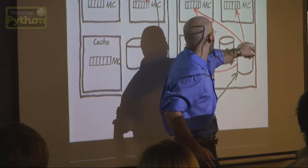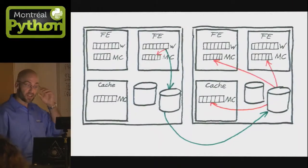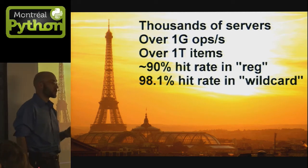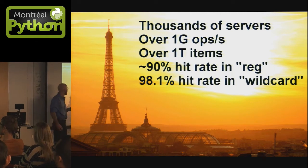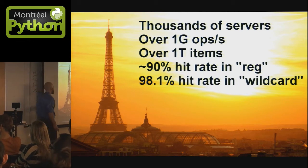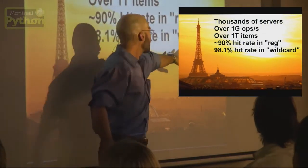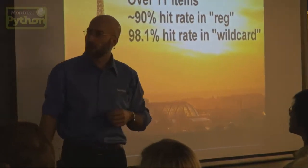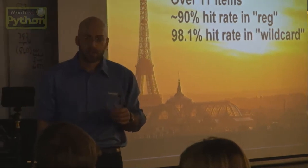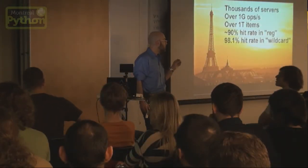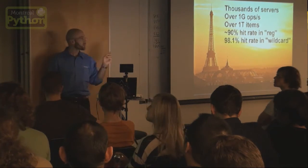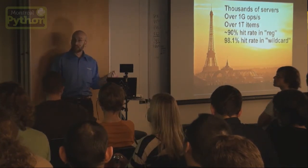In terms of scale, that's an infrastructure that is composed of thousands of servers. Over a billion cache operations per second. Over a trillion key value pairs. And we segment the memory space into multiple pools. And wildcard, the default pool, the largest of our server pools, has a hit rate of 98.1%. That means that even though we're using MySQL to store and persist data, the data that we use to run the site is fetched mainly, the vast majority of it, straight out of RAM.